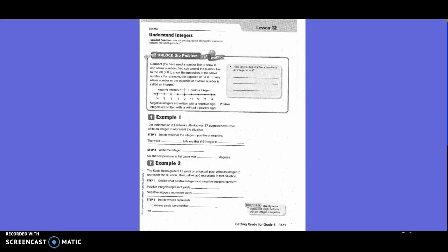Unlock the problem. Connect. You have used a number line to show 0 and whole numbers. You can extend the number line to the left of 0 to show the opposite of the whole numbers. For example, the opposite of positive 3 is negative 3.